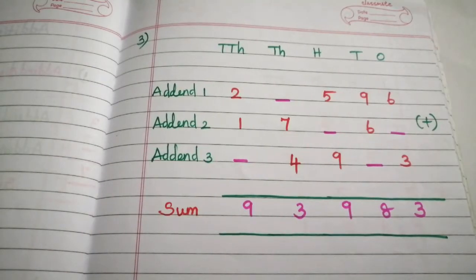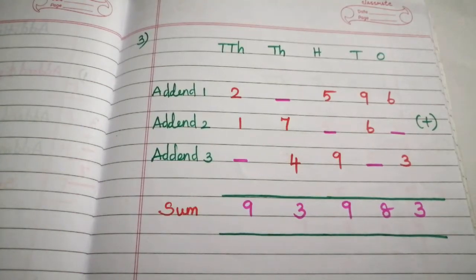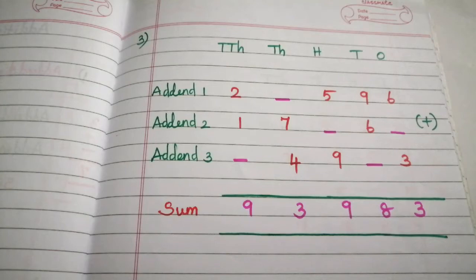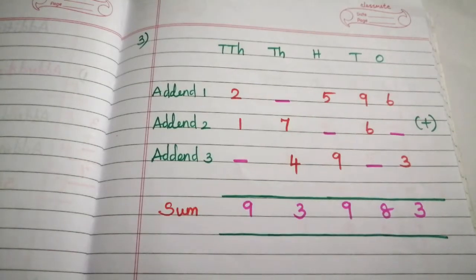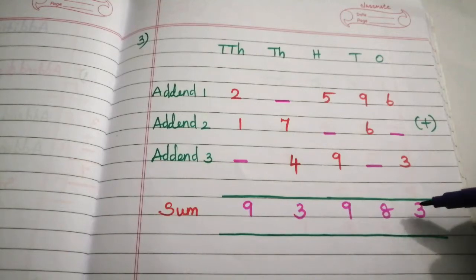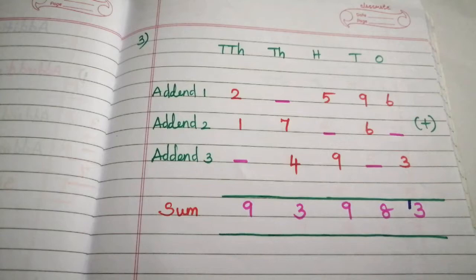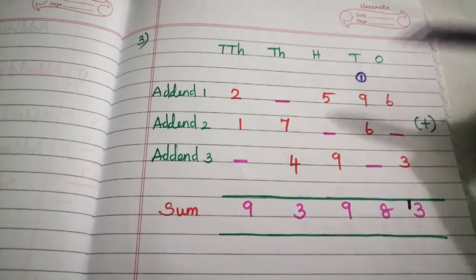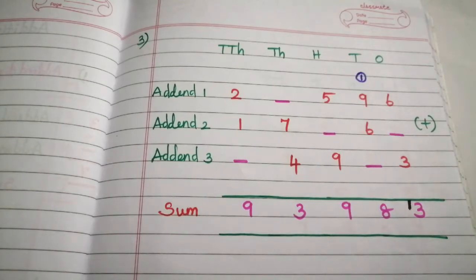Problem 3. In this problem, we find missing digits for a three-addend problem, applying the same rule: sum digit minus given addend digits. Starting from the 1's place, since 6 plus 3 is 9 and we can't subtract 9 from 3, this is not 3 — it is 13. Put the carryover in the 10's place. So 13 minus 9 is 4.